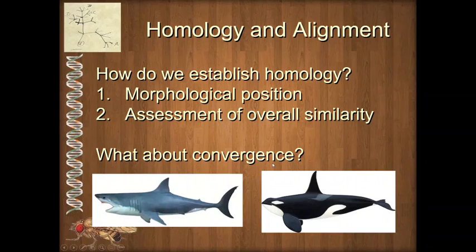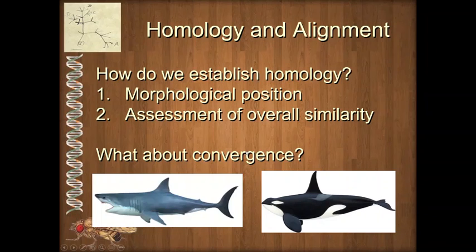Some people also use the term parallel evolution; I think it's a subcategory of convergence, so we won't worry about it now. Let me give an example. Looking at just one feature: a great white shark and an orca both have a dorsal fin that helps stabilize them moving through their aquatic environment. Is this dorsal fin homologous — inherited from a common ancestor — or is the similarity due to convergence? Convergence is similarity due to selection for a common environment: a similar trait randomly evolved and was then selected for because organisms were exposed to similar selective regimes.